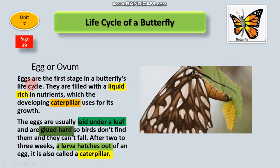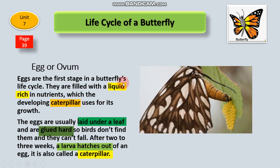Eggs are the first stage in a butterfly's life cycle. They are filled with a liquid rich in nutrients, which the developing caterpillar uses for its growth.